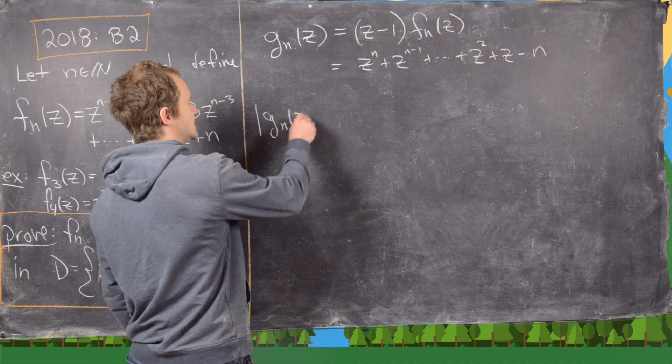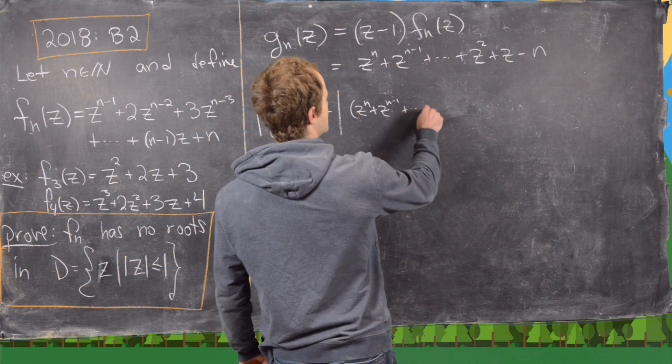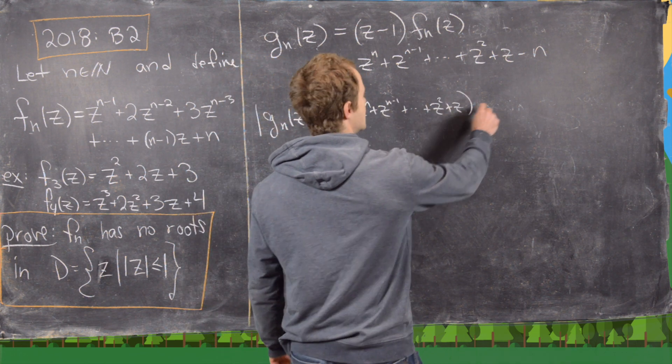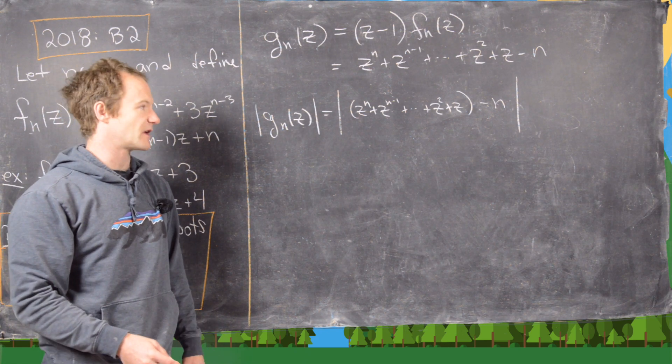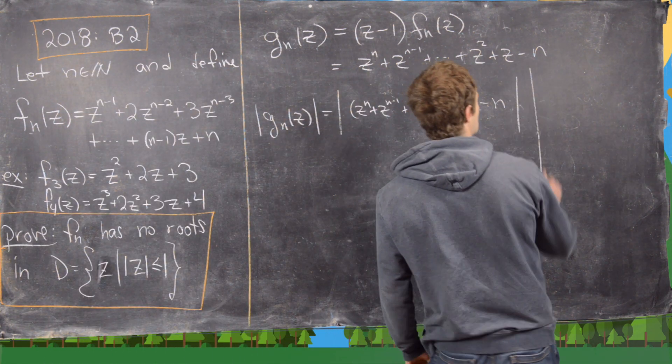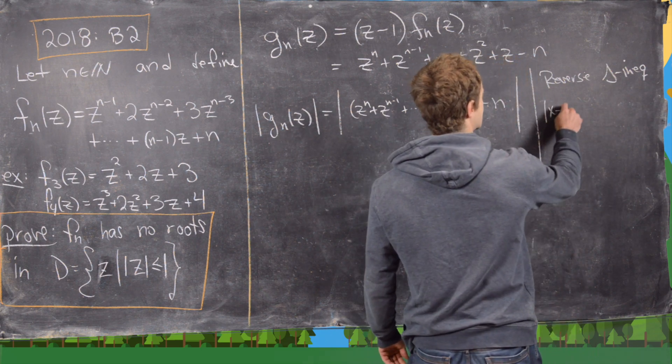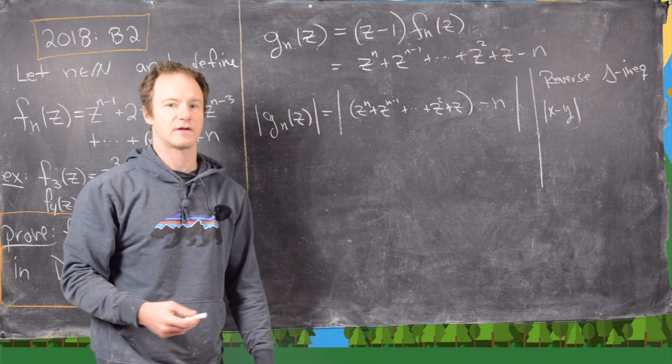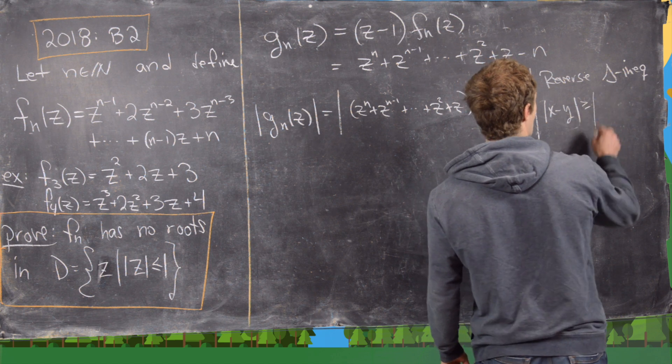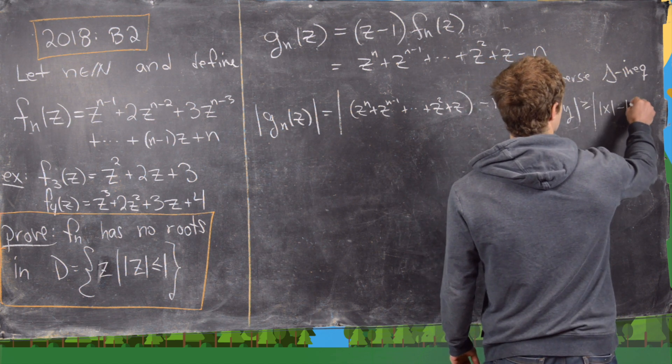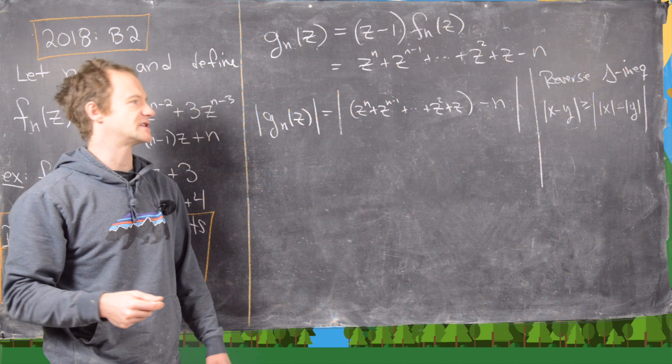So now let's look at gn of z like this. Notice that's going to be the modulus of zn plus zn minus 1 all the way down to z squared plus z minus n. I put this first bunch of terms in parentheses because I want to use something called the reverse triangle inequality. Let's recall this reverse triangle inequality. It says that the modulus of x minus y is bigger than or equal to the modulus of x minus the modulus of y. So you can prove it pretty easily from the triangle inequality.